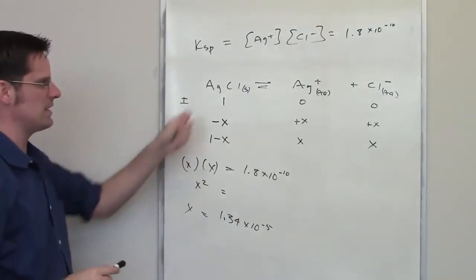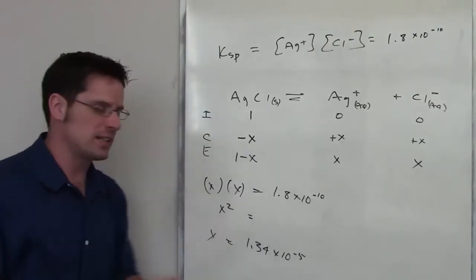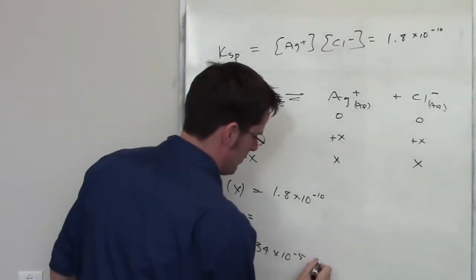That is the molar solubility of silver chloride at 25 degrees Celsius. Oh, and parenthetically, by the way, this is in units of moles per liter.